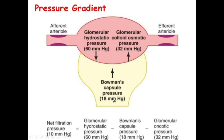So 50 mmHg is trying to retain fluid within the glomerulus, while the only force of 60 mmHg hydrostatic pressure is trying to push fluid into the Bowman's capsule. If you subtract 50 from 60, you get the figure of 10. The net filtration pressure is 10 mmHg — this is what we used in the previous lecture. These are known as the Starling forces.